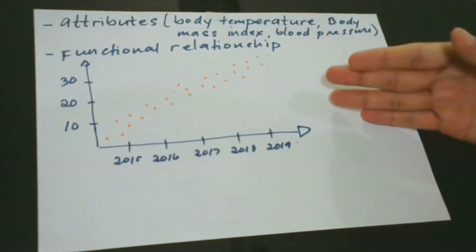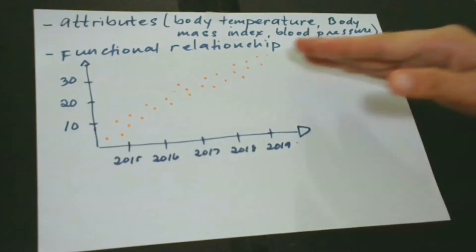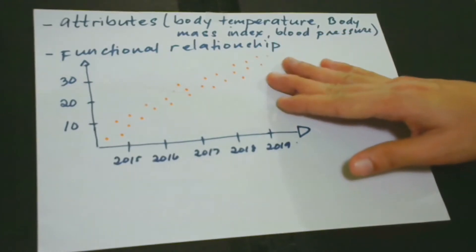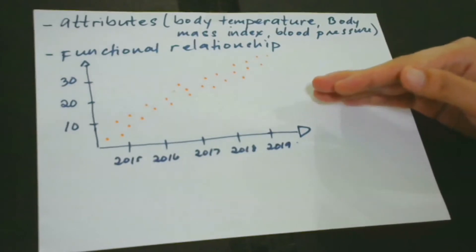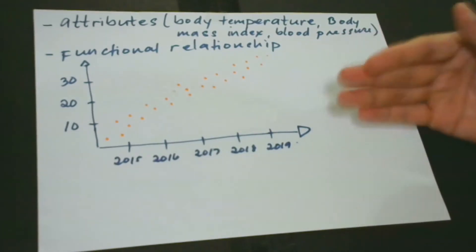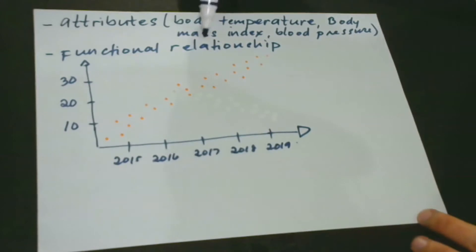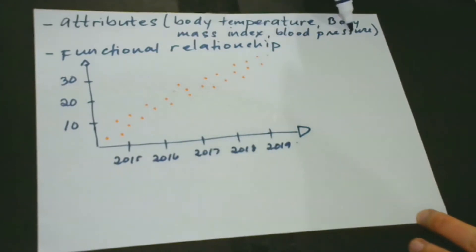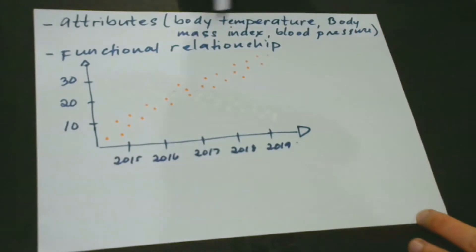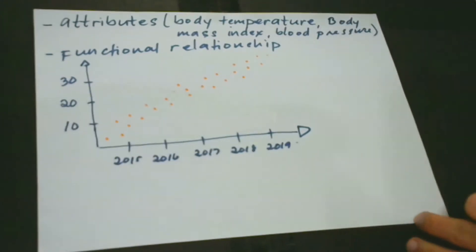You may want to ask about the meaning of functional relationship. Functional relationship means that a certain attribute affects another attribute. For example, body mass index has something to do with blood pressure, or blood pressure has something to do with body temperature. That's the kind of interaction or relationship we're referring to.